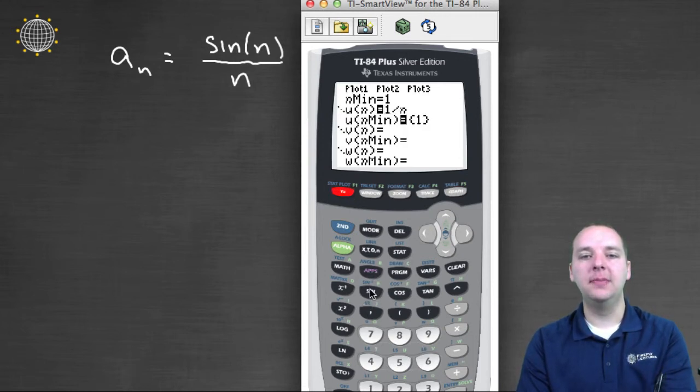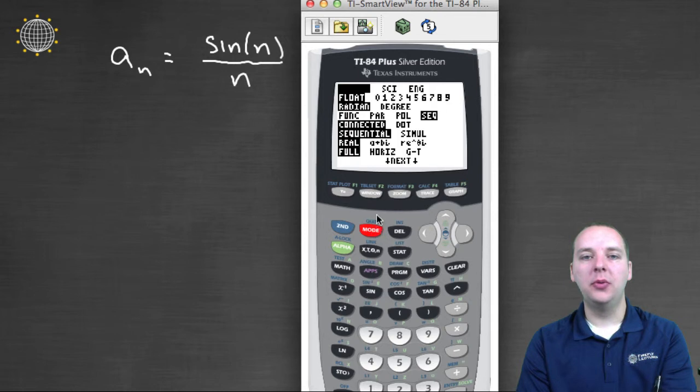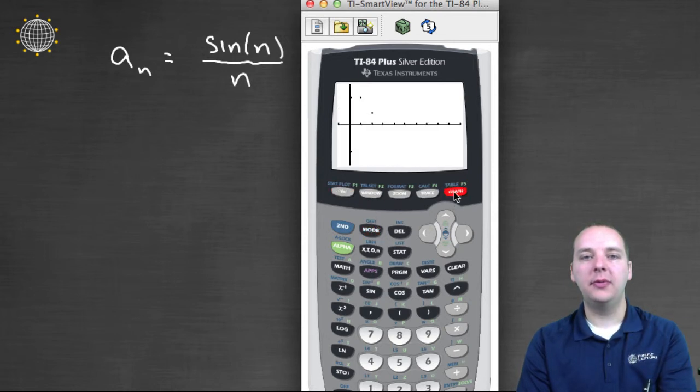So something like this, it would be very helpful to have a calculator to go in here. Let's change our function to be sine of n over n. Let me just check my mode real quick, make sure I'm in radian mode. I am. Okay, so we'll graph this.